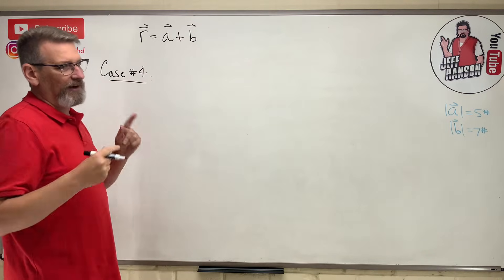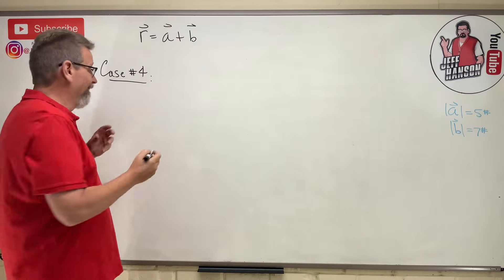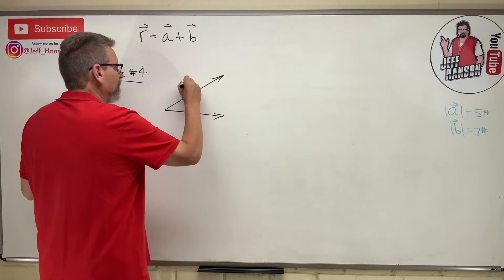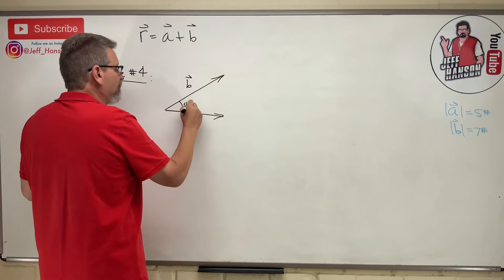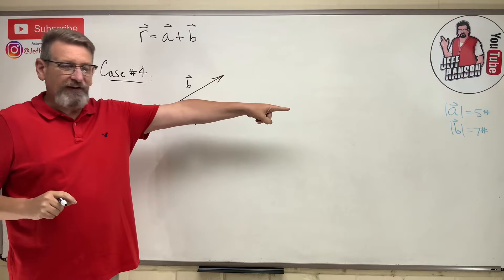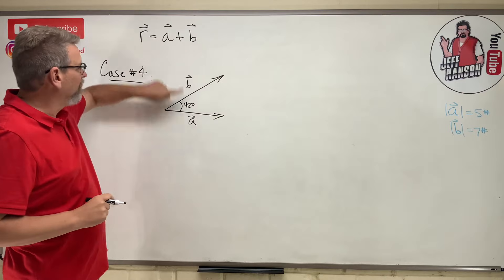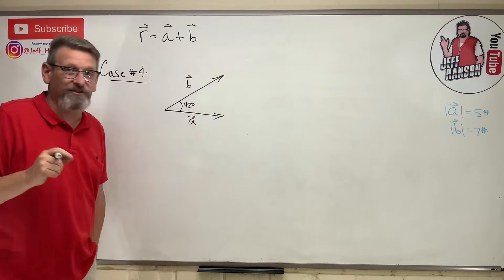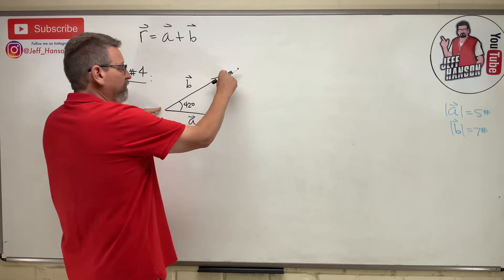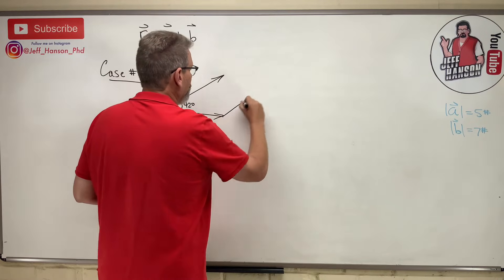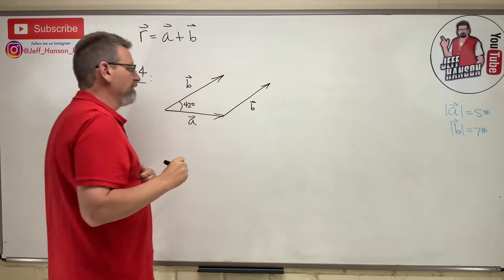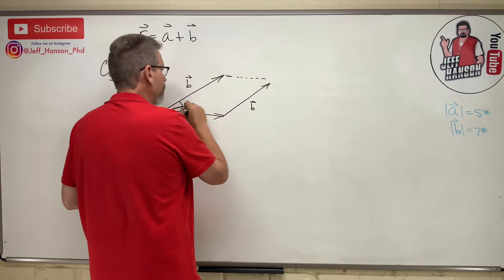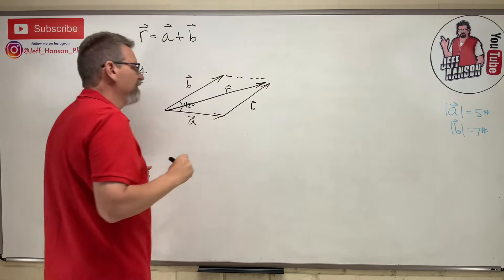Last time we talked about vectors in a straight line and vectors at right angles, but the world doesn't always live in right angles. Sometimes things are weird. What if you have vector A and vector B at 42 degrees to each other? The magnitude of A is five and the magnitude of B is seven, just like last time. Using the tip-to-tail rule, we move vector B to the end of vector A, connect them, and get vector R. You could also use the parallelogram rule — either way you get the same result.